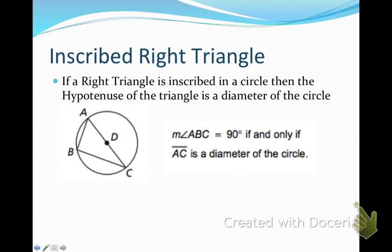All right, we have another theorem that says if a right triangle is inscribed in a circle, then the hypotenuse of the triangle is a diameter of the circle. So here we have a right triangle ABC. And since it is a right triangle, AC has to be the hypotenuse because it is the diameter of the circle.